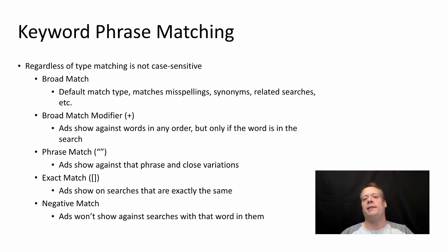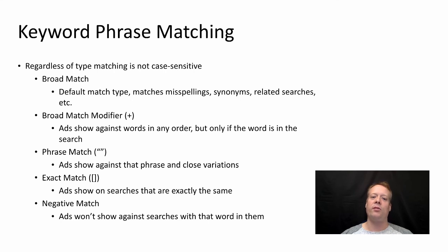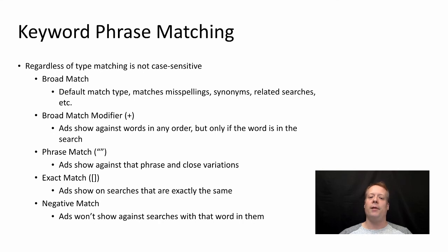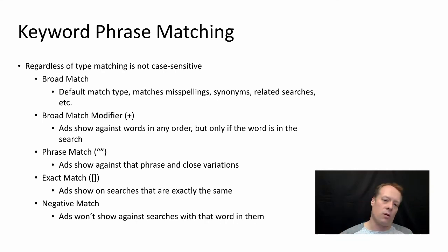There are a number of different ways to match against search phrases using the Google Ads framework. What is a broad match? That's your standard match and it's usually the good way to go — you just put in the phrase and Google will do its best to figure out the types of searches that will match against it. You can also do a broad match modifier, where you add a plus in front of a certain word, and ads show against words in any order, but only if that word is actually in the search.